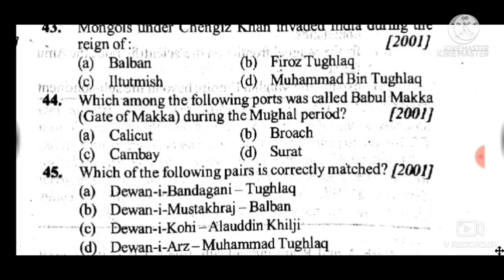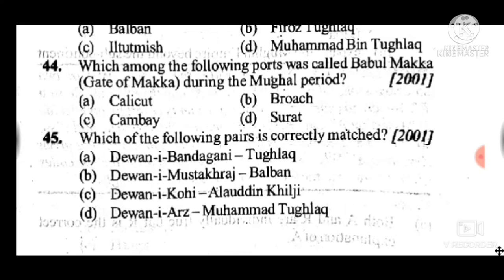Question 45: Which of the following pairs is correctly matched? Answer is A, Diwan-i-Bandagan — it was established by Firoz Shah Tughlaq.